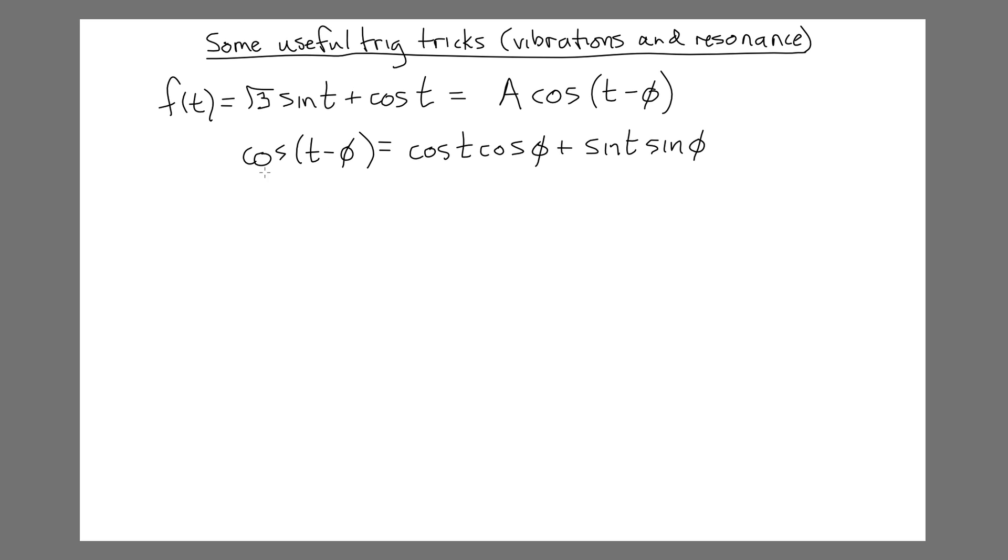So what are we looking for now? We're trying to match up the form that we want to the form that we have. So you'll notice I have a cosine t with a 1 in front, and I have a sine t with a root 3 in front. Down here I have a cosine t with a cos phi, and a sine t with a sine phi. So we can match up these pieces, and notice that the sine t here, like this sine t here, has a sine phi in front, but here it's a root 3.